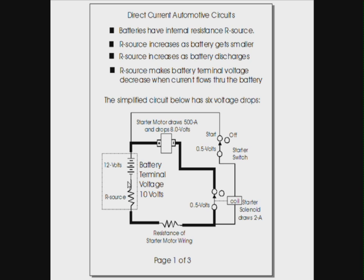We have a series circuit where the battery current flows through the starter motor. And we also have a series circuit where the battery current flows through the wiring resistance, the starter solenoid coil, the starter switch, and back. So there's two circuits here. It's usually easier to solve the inside circuit first, then solve the outer circuit second.